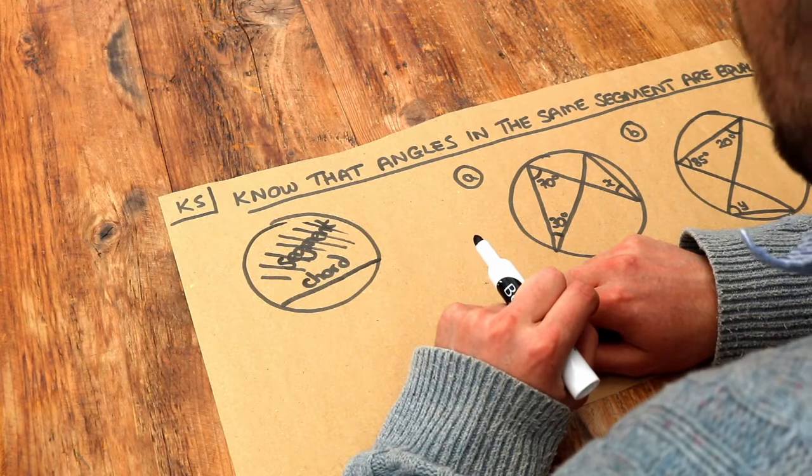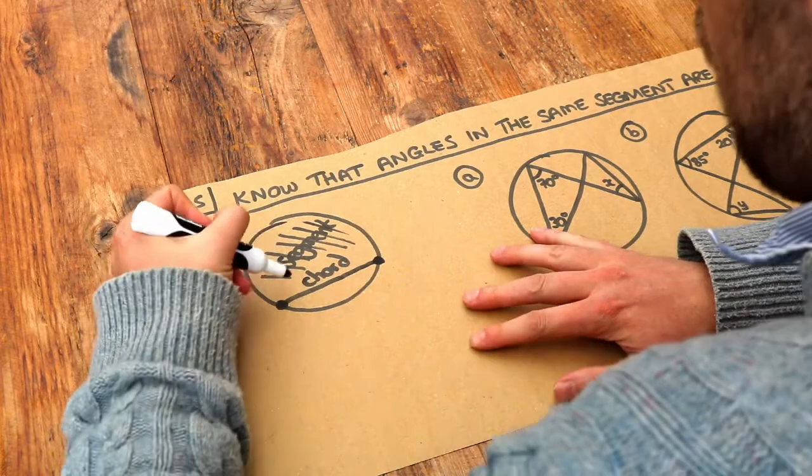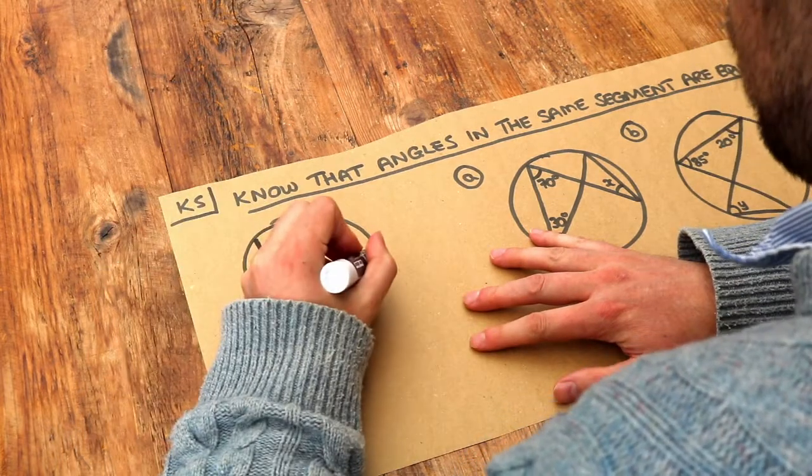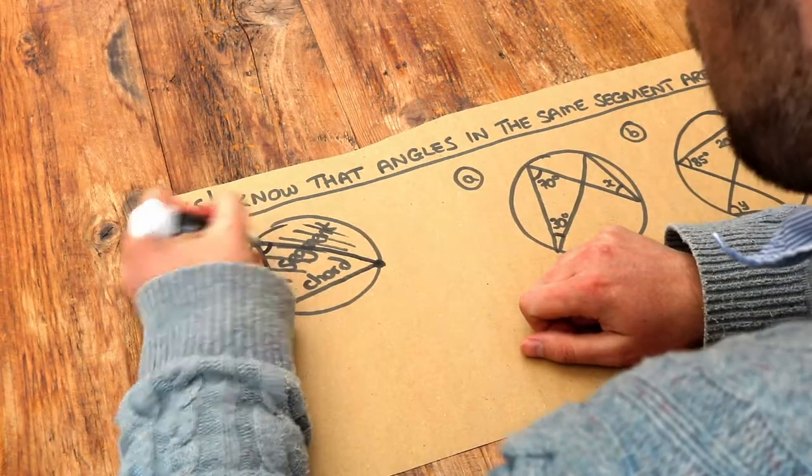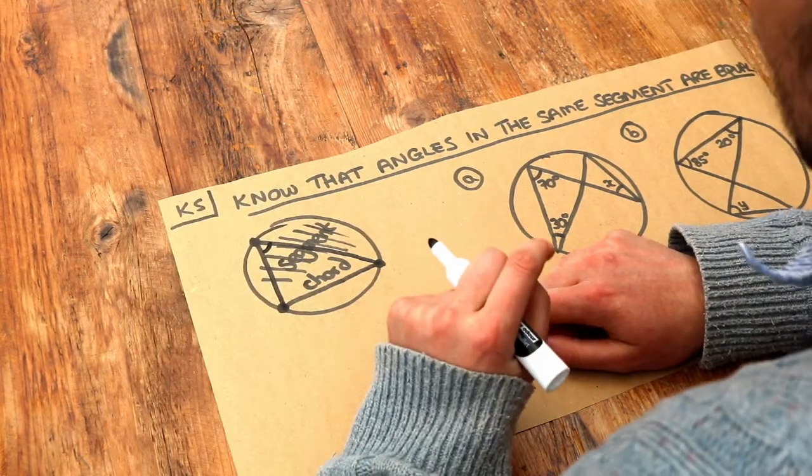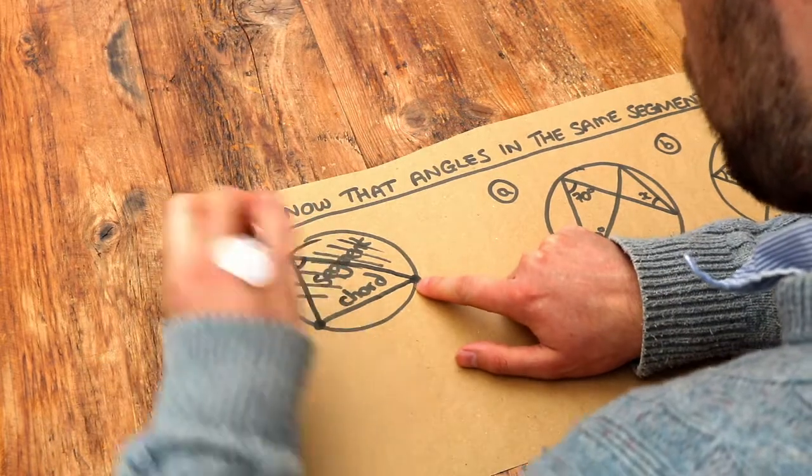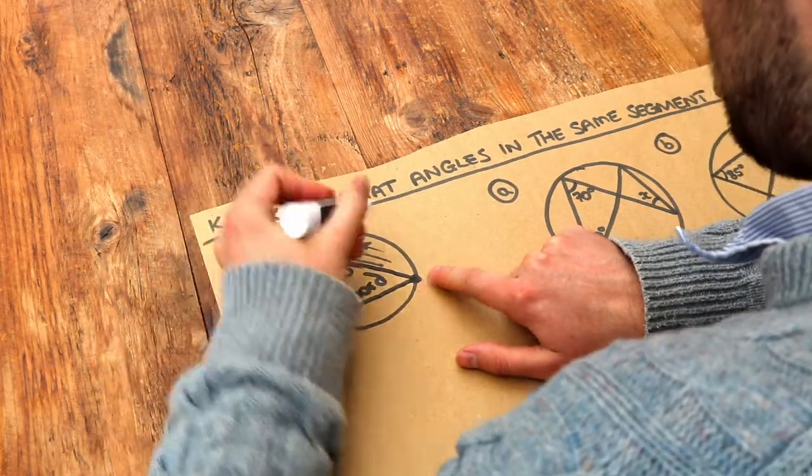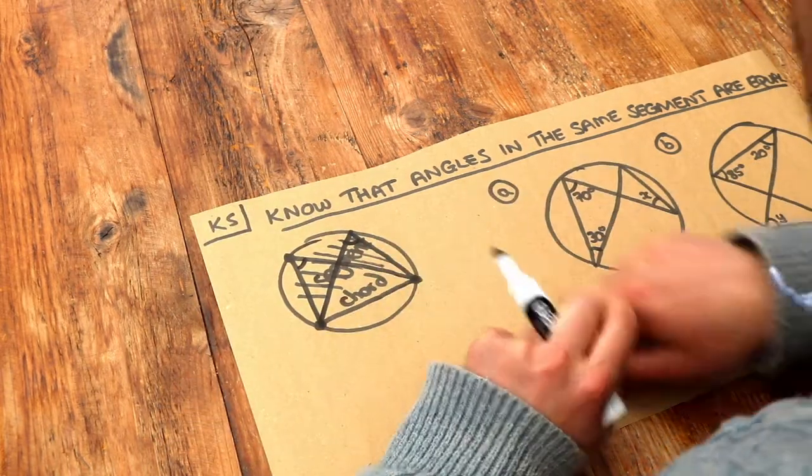Now what it means to have an angle in the segment is that if you start from the two ends of your chord and you fire onto the circumference from those two ends to meet at a point, then that angle they meet at will always be the same wherever you fire to. So if I was to fire from these two ends of the chord to another point in that segment, then that angle where you fire to would still be the same.